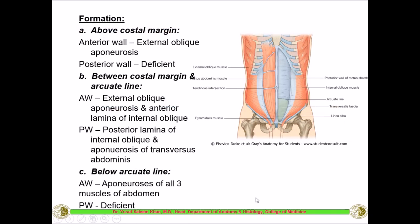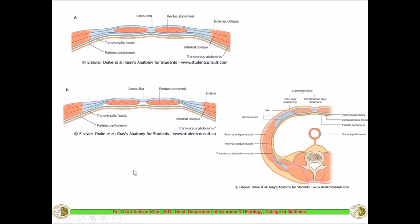Below the arcuate line, the posterior wall is deficient. The aponeuroses of all three muscles join together and cover the rectus abdominis anteriorly only. The external oblique, internal oblique, and transversus abdominis aponeuroses all form the anterior wall of the rectus sheath. So below the arcuate line, all three aponeuroses form the anterior wall, the posterior wall is deficient, and it ends as the arcuate line.